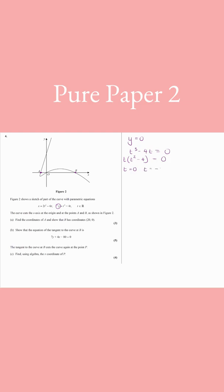So t can be 0, t can be minus 2, or t can be 2. Because that's the same as t plus 2, t minus 2. Or you make it equal to 0 and take plus and minus the square root.